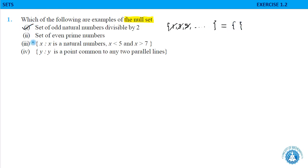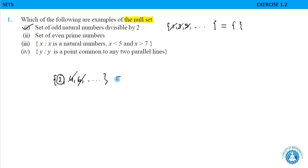Second: set of even prime numbers. List out even numbers: 2, 4, 6, and so on. Among these, only 2 is prime, so the remaining are cancelled out. The set contains only the element 2, so it would not be a null set — it will be a finite set.